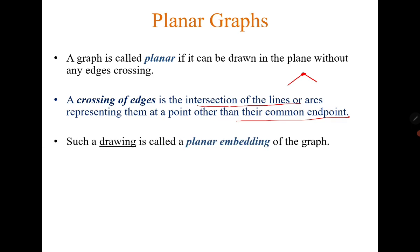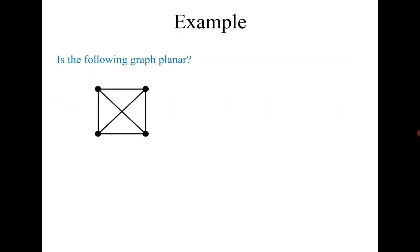Such a drawing is called a planar embedding of the graph. Let's consider a simple example. A graph is planar if you can draw it without edge crossing. You can draw one edge, and the other edge can be taken from outside, so this is a planar graph.